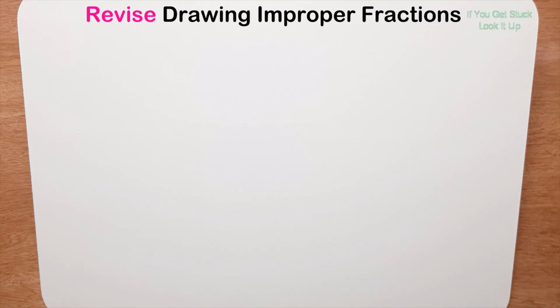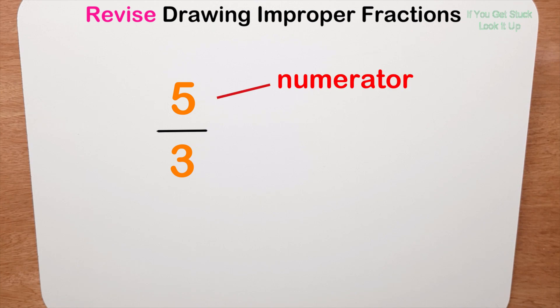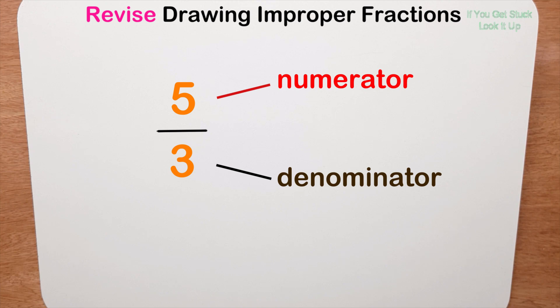In this video we're going to look at drawing improper fractions. An improper fraction is where the numerator, or the top number, is bigger than the denominator, or the bottom number.